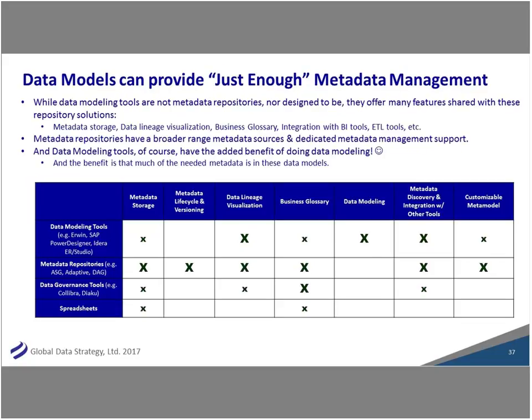To summarize the tool landscape: what data modeling tools do well is, of course, data modeling. They can do some lineage, some metadata storage. They're probably not going to let you fully customize the metadata model, and they have some glossary capability but not a full-fledged one. If you want a full-fledged glossary, maybe something like a data governance tool like Collibra or Talend, which is now Informatica. Metadata repositories by definition — folks like ASG and Adaptive and Data Advantage Group — do metadata great, but what they're not going to do is data modeling. A spreadsheet is probably the number one competitor for any data management tool in the market. You could have a glossary in a spreadsheet; it probably wouldn't be enterprise scale.